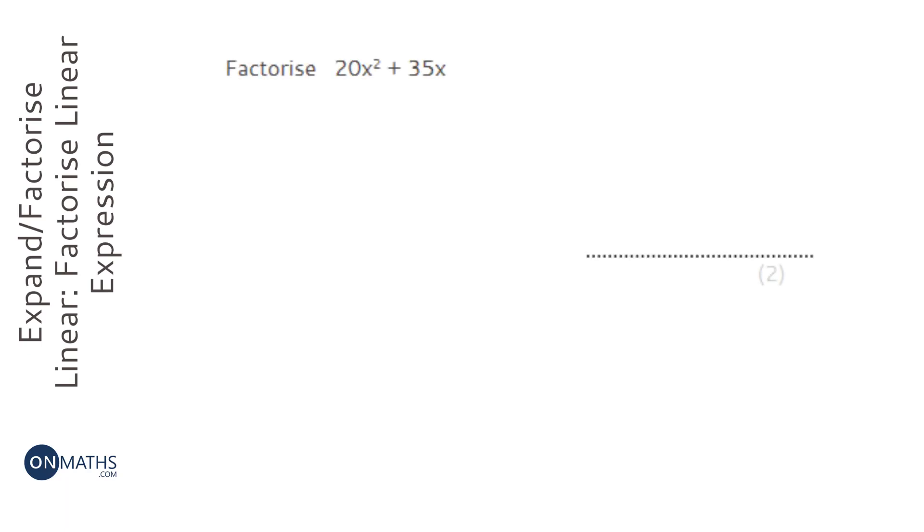So when we're asked to factorise, it will either involve one set of brackets or two sets of brackets. Now this isn't a standard quadratic - it doesn't have an x squared, an x, and a number term. So this is going to be a single bracket.